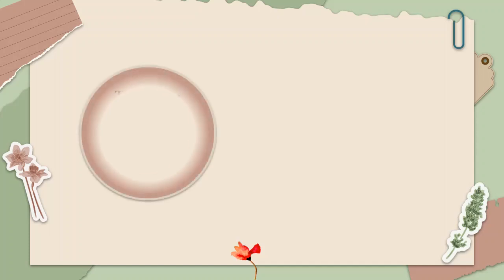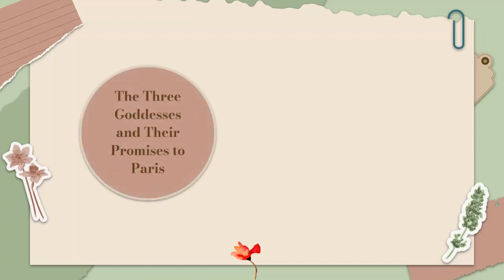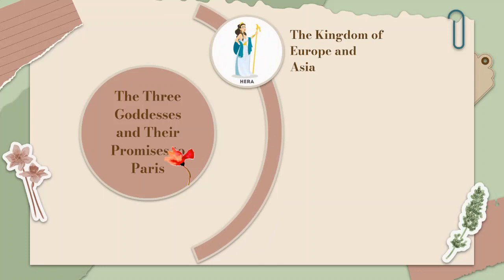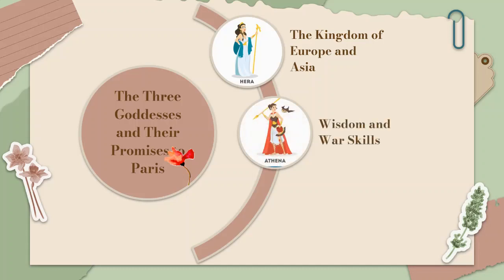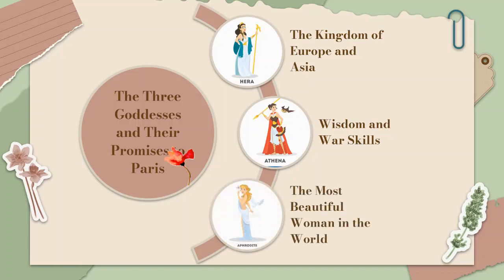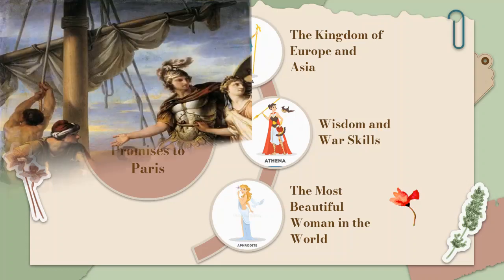The three goddesses tried to make promises to Paris — or to use a more direct word, they bribed him. Hera promised him the kingdom of Europe and Asia; Athena promised wisdom and martial skills. But it was Aphrodite's suggestion that grabbed his attention most: the most beautiful woman in the world. It was known that the most beautiful woman on earth was Helen. Quite ironically — and I am being ironical — Aphrodite forgot to mention that Helen was already married. So the whole story started from there.